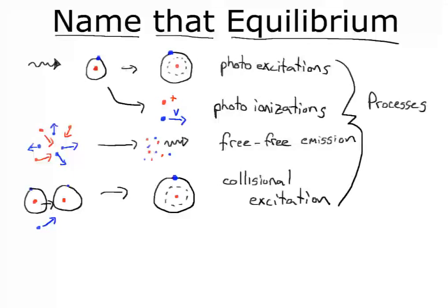Of course, for every process, we have an inverse process. We can take an excited atom and go back to become a photon and a de-excited atom. We can have an ionization recombine to produce a neutral atom and a photon. We can have a photon strike a collection of charged particles and cause them to move faster — inverse Bremsstrahlung or inverse free-free emission. And we can have collisional de-excitation, where an excited atom strikes another atom and de-excites it, with the extra energy going into the kinetic energy of one of the contributing particles. So when we're talking about Name That Equilibrium, we're talking about the balance between these forward and inverse processes.